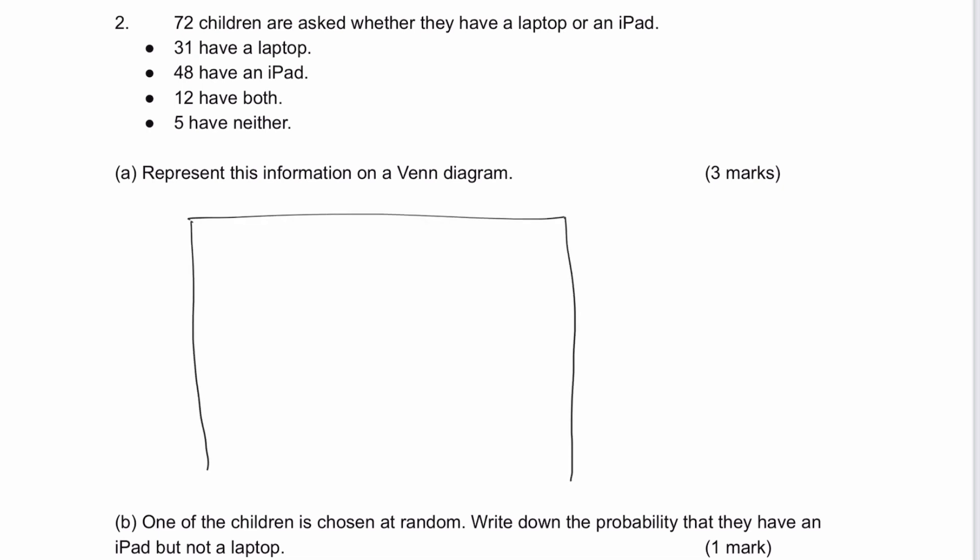Basically, we've got the universal set and then we've got two circles in the middle, one of which is the information relating to laptop and the other relating to iPad. So we can have a look now and see what information we can put directly into the Venn diagram.